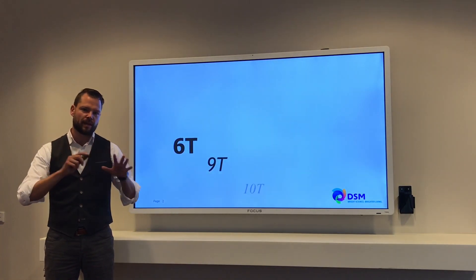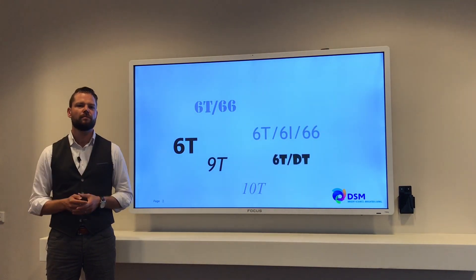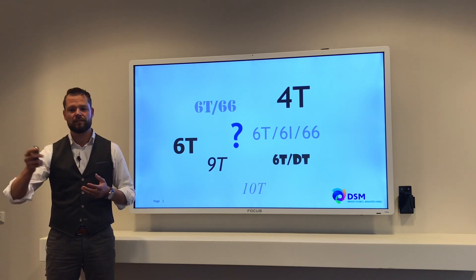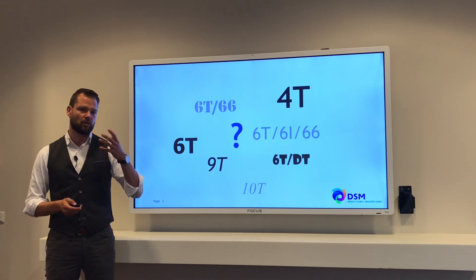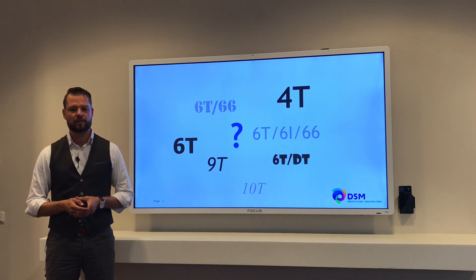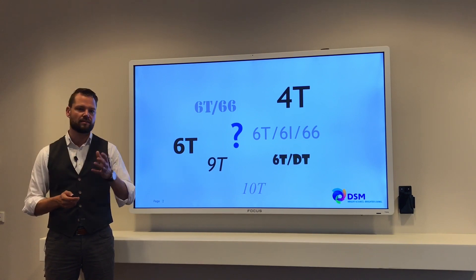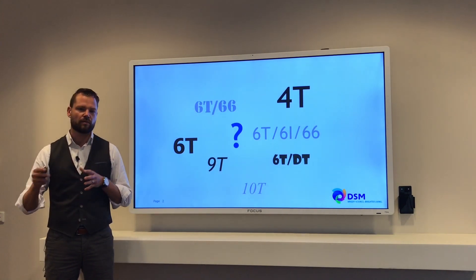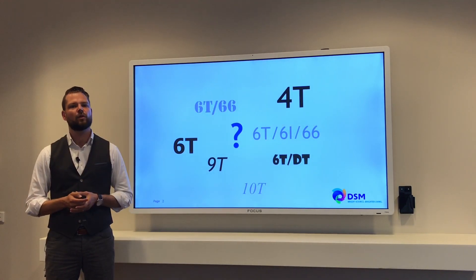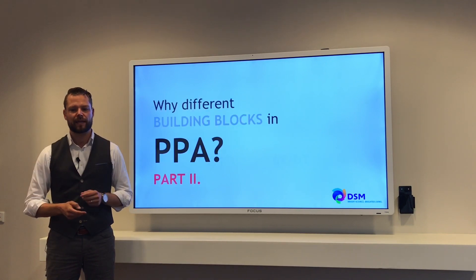We're going to make a deep dive into PPAs because you see a lot of different PPAs out there in the market. They consist of different building blocks — 6T, 9T, some of them are called 6T/6-6, blends with polyamide 6-6. You also see products like 6DT and 6I. Today we're going to explain what these different building blocks really are, how they contribute, and what the influence is on the mechanical properties.